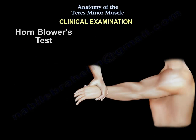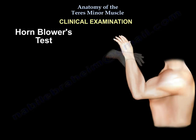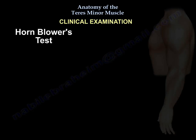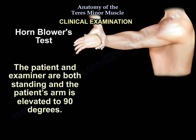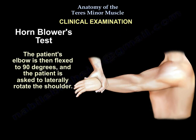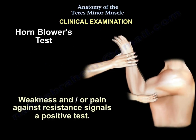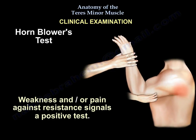Clinical examination: the Horn Blower's Test. The test is used to determine the strength of the Teres Minor muscle. The patient and the examiner are both standing, and the patient's arm is elevated to 90 degrees. The patient's elbow is then flexed to 90 degrees and the patient is asked to laterally rotate the shoulder. Weakness and/or pain against resistance signals a positive test.